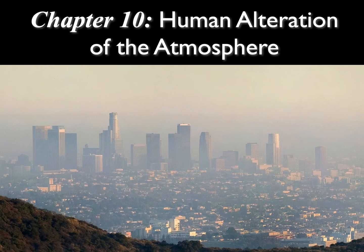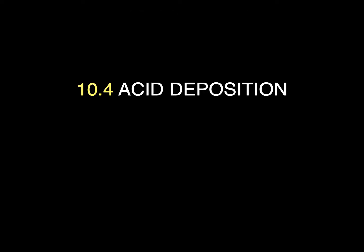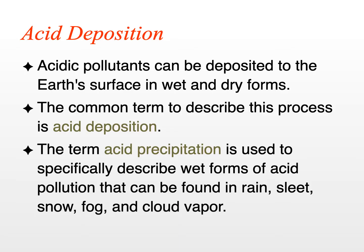Chapter 10, Human Alteration of the Atmosphere, Section 10.4, Acid Deposition. Many of our emissions related to fossil fuels create acidic pollutants. These pollutants can be deposited to the Earth's surface in both dry and wet forms. The common scientific term to describe this form of pollution is acid deposition.